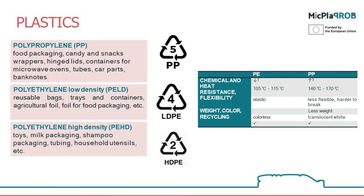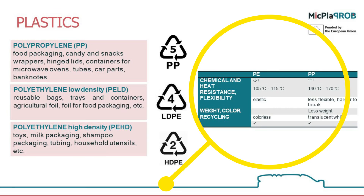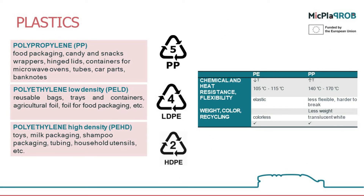How do we determine which types of polymer material are used in which product, and what are their properties? Polypropylene and polyethylene have different properties dictated by their end use. To the right of this slide, there is a table that briefly presents the essential differences between these two most common forms of polymers belonging to the same group. Polypropylene is more chemically and thermally resistant, withstanding higher temperatures.